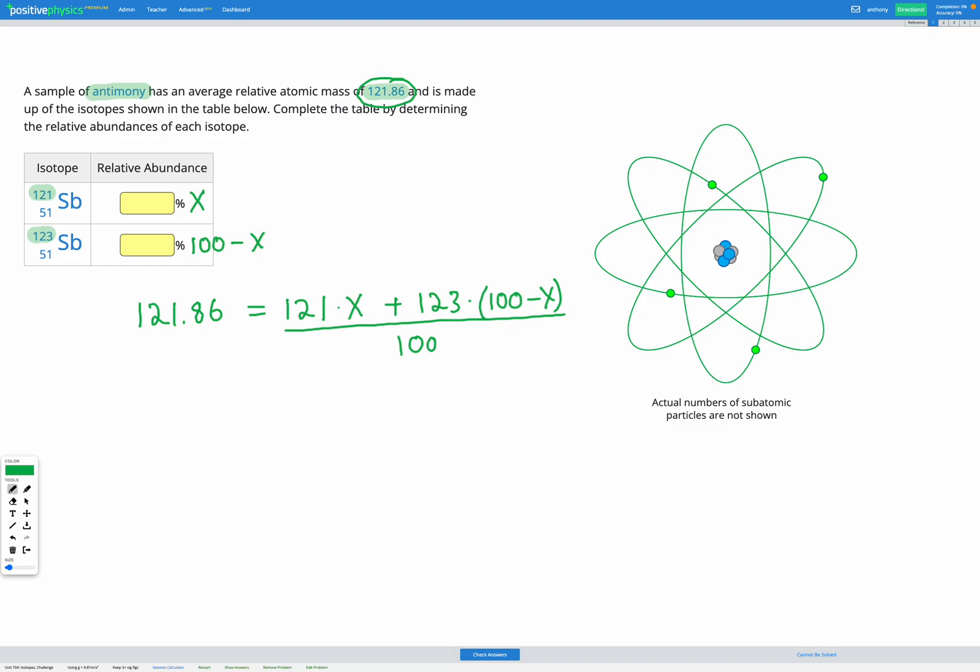Now we just need to follow this through to get our answer. So first I'm going to multiply by 100 on both sides. To get rid of that 100 on the bottom of my fraction. So that's going to give me 12,186. And then I'm going to copy out the rest of my equation.